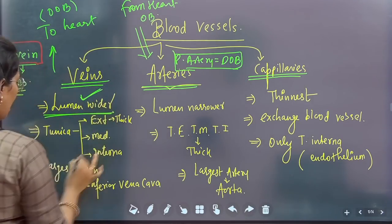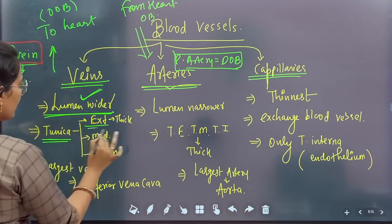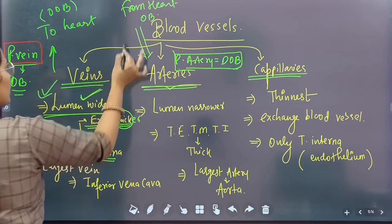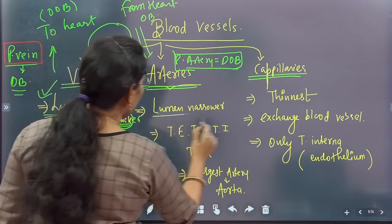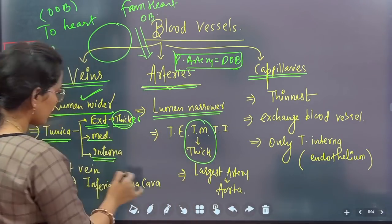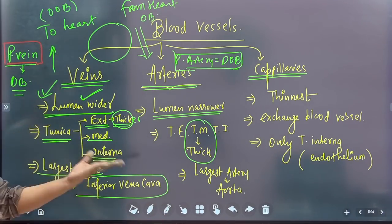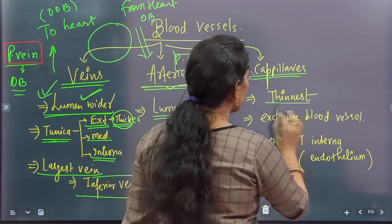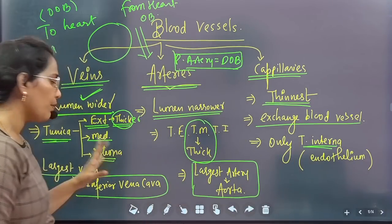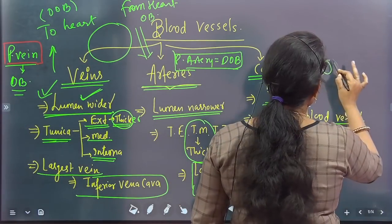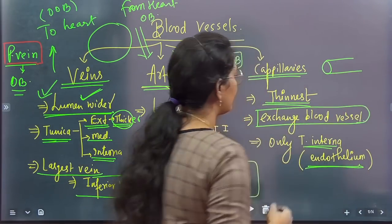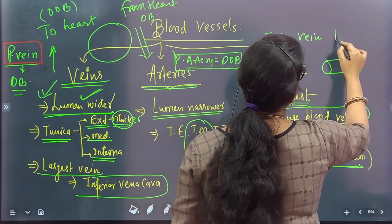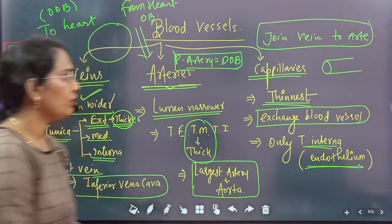Remember that the lumen of veins is wider. Blood vessels have three tissue layers: tunica externa, tunica media, and tunica interna. In veins, tunica externa is thicker and lumen is wider; in arteries, tunica media is thicker and lumen is narrower. The largest vein is the inferior vena cava, and the largest artery is the aorta. Capillaries are the thinnest — they only have tunica interna (endothelium); tunica externa and media are absent. Capillaries are exchange blood vessels where gas exchange occurs, and they connect arteries to veins.